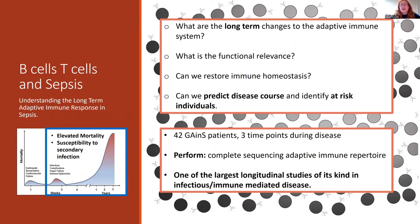I'm aiming to characterize those changes, assess their functional relevance, and identify how I could restore them to homeostasis to improve outcomes in individuals with sepsis. To do this, I'm utilizing the sample bank from GAINS, with a study size of 42 individuals with sepsis, each with three time points during the disease course, and extensive clinical metadata. I'm performing complete sequencing of the adaptive immune repertoire, which will hopefully be one of the largest longitudinal studies of the adaptive immune system encompassing the sepsis response.